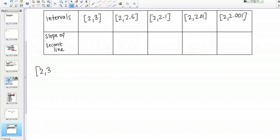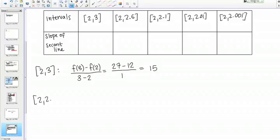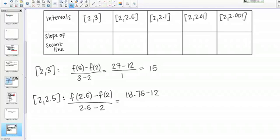For the interval from 2 to 3, the slope of the secant line is going to be F of 3 minus F of 2 over 3 minus 2. That's just a change in y over the change in x over that interval. To save ourselves some time, I've gone ahead and calculated these function values. F of 3 is 27 minus 12, and this is over 1, which is 15. Then we're just going to go down the line and calculate the rest of these slopes. I'm calculating the slope of the secant lines. This is F of 2.5 minus F of 2 over 2.5 minus 2. That gives me 18.75 minus 12 over 0.5, which equals 13.5.